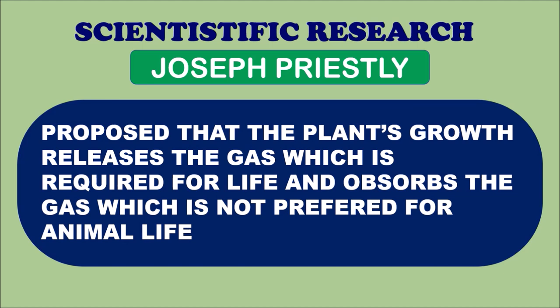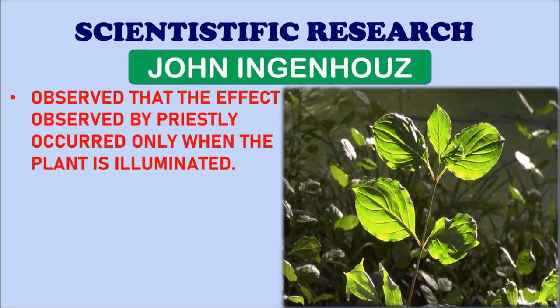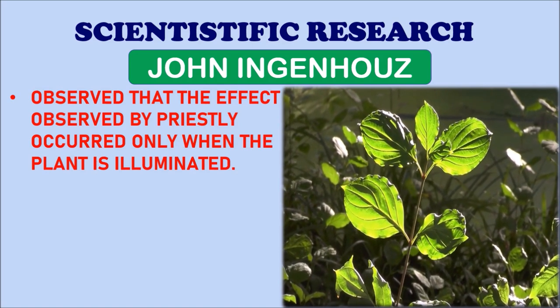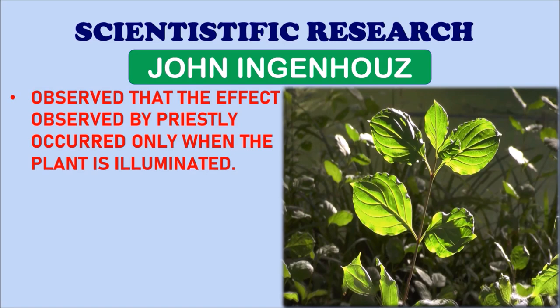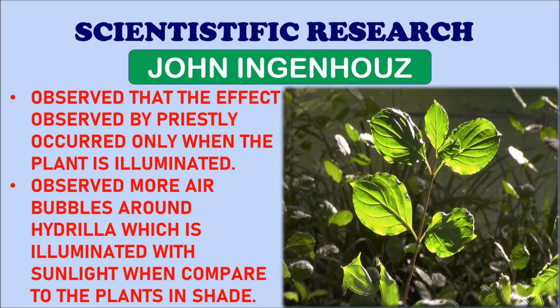Priestley proposed from his observations that plant growth releases a gas which is required for life and absorbs the gas which is not preferred for animal life. John Ingenhaus further observed that the effect noted by Priestley occurred only when the plant is illuminated, meaning light plays an important role in photosynthesis. He observed more air bubbles around hydrilla illuminated with sunlight compared to plants in shade, and found that these air bubbles contained oxygen gas, confirming that light is essential and oxygen is released in this process.